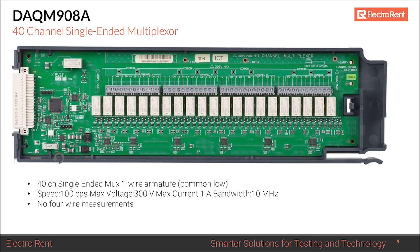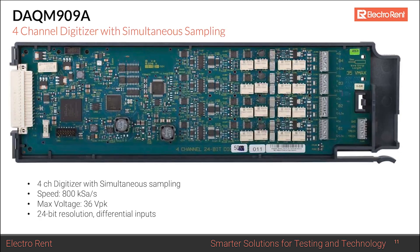The DAQM908A is a 40-channel unit — much denser and more channels per slot. However, all channels share a common low, making it single-wire switching only. This makes it ideal for signals on a unit under test that are all referenced to the same ground, such as 5V, 10V, or 12V test points. There are no four-wire measurements, no reference junction, and therefore no thermocouple measurement capability.